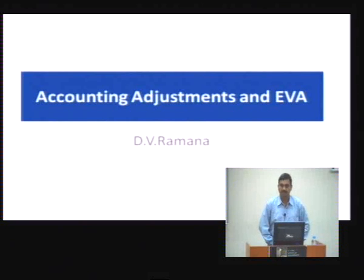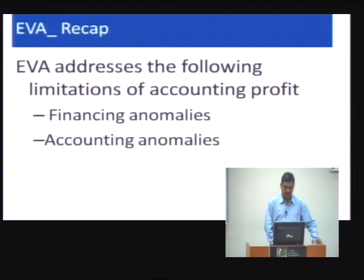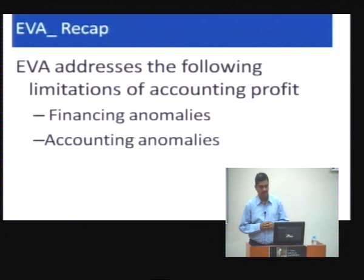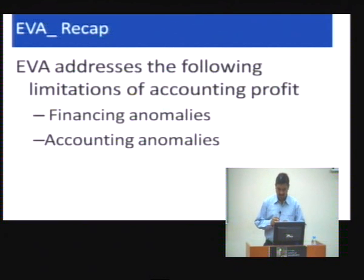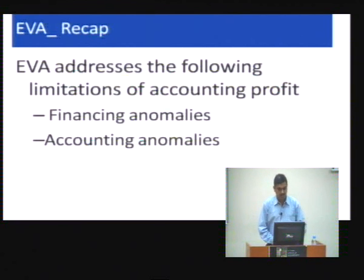Good afternoon. Today we will discuss accounting adjustments required while calculating EVA. EVA is an excess of NOPAT over capital charge. It is important to say that EVA is not a GAAP number — it is a managerial or investment analyst driven number, and it tries to address two limitations: financing anomalies and accounting anomalies.